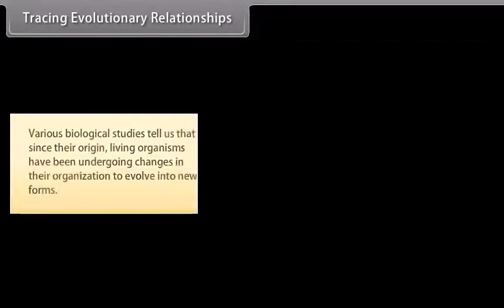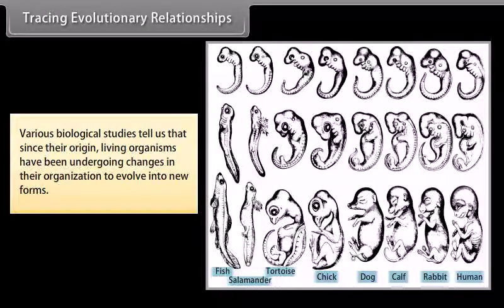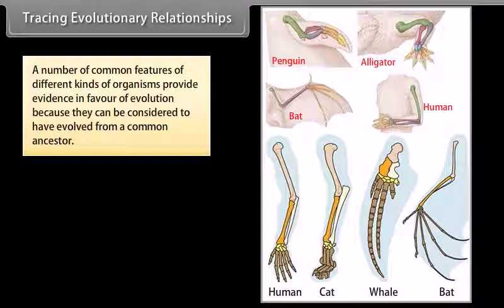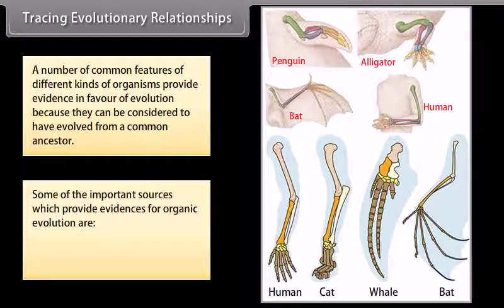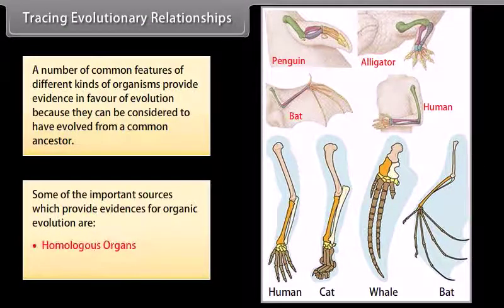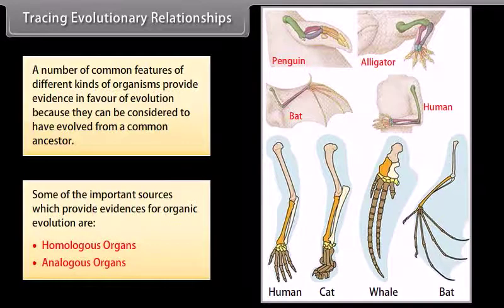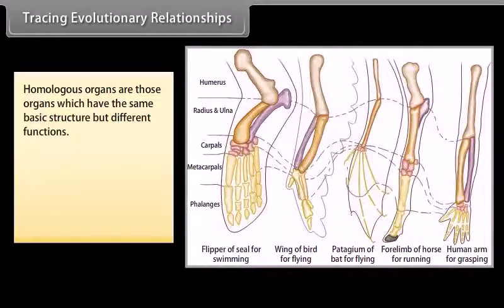Tracing evolutionary relationships: Various biological studies tell us that since their origin, living organisms have been undergoing changes in their organization to evolve into new forms. A number of common features of different kinds of organisms provide evidence in favor of evolution because they can be considered to have evolved from a common ancestor. Some of the important sources which provide evidence for organic evolution are homologous organs and analogous organs.